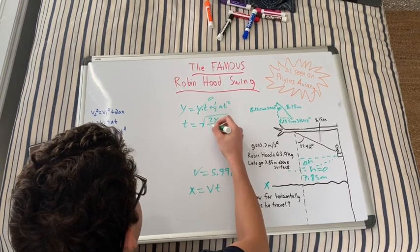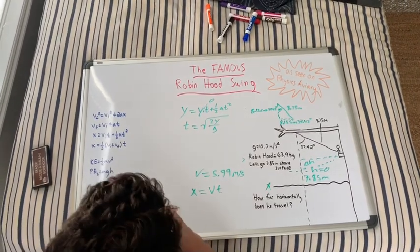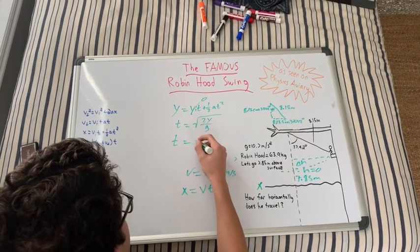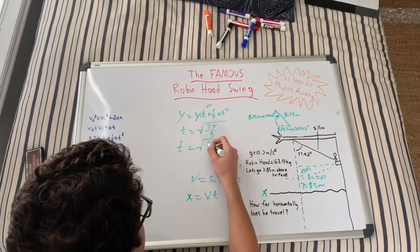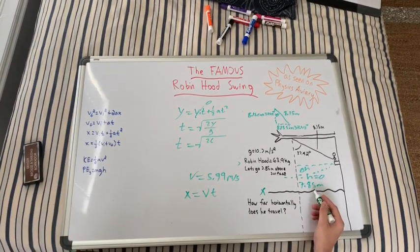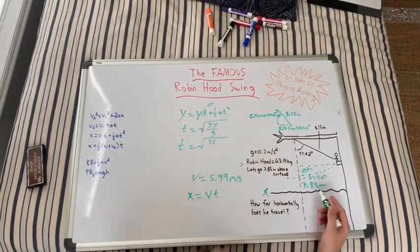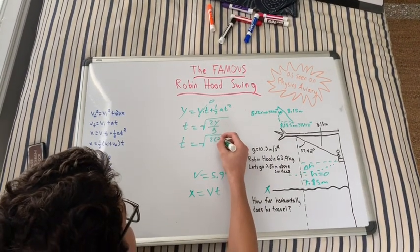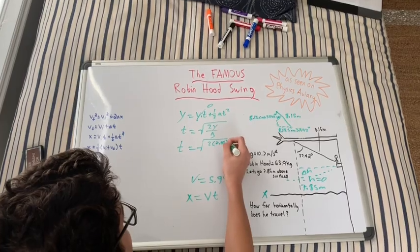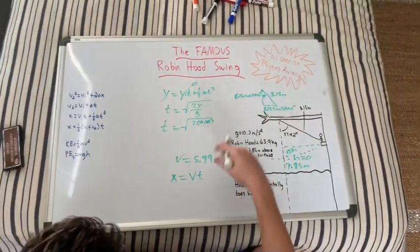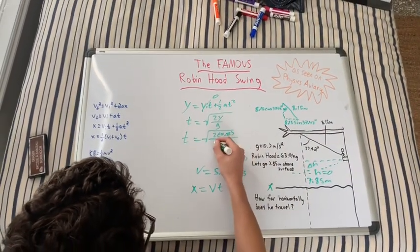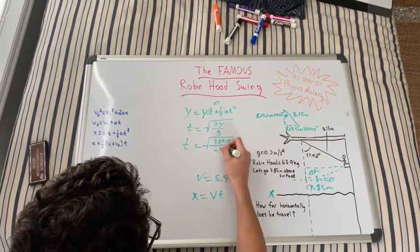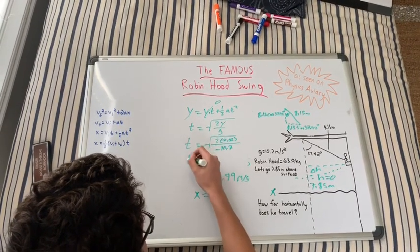Which is g in this case. So our time is going to equal the square root of 2 times 7.85—because that's how high up he is—and that's going to be a negative displacement because he's falling down, and our gravity is going to be negative 10.7. Our time comes out to 1.21 seconds.